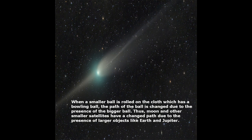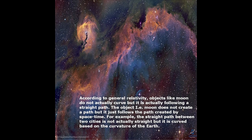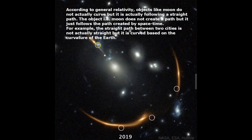Thus, the Moon and other smaller satellites have a changed path due to the presence of larger objects like Earth and Jupiter. According to general relativity, objects like the Moon do not actually curve, but it is following a straight path. The Moon does not create a path but just follows the path created by space-time.